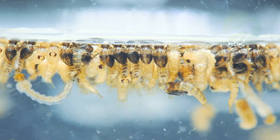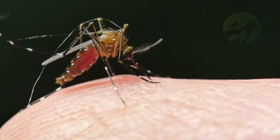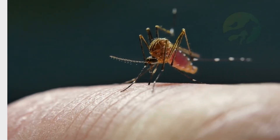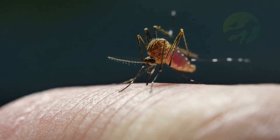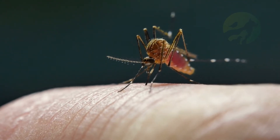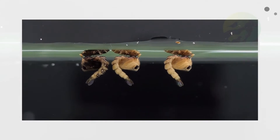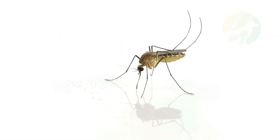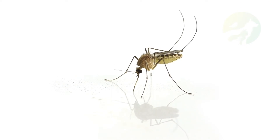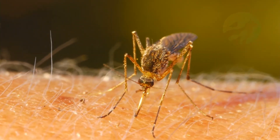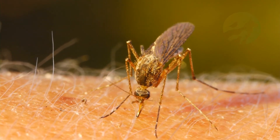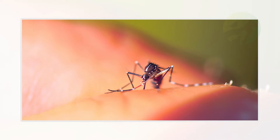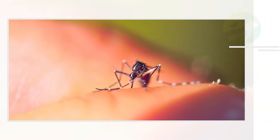In mosquitoes, the proboscis is adapted for sucking up liquids such as nectar, sap, or blood. Both sexes feed on nectar, but the female is also capable of hematophagy — drinking blood. Females do not need blood to survive, but they do need supplementary substances such as protein and iron for the development and laying of their eggs, except in the subfamily Toxorhynchitinae, which is made up of predatory larvae.